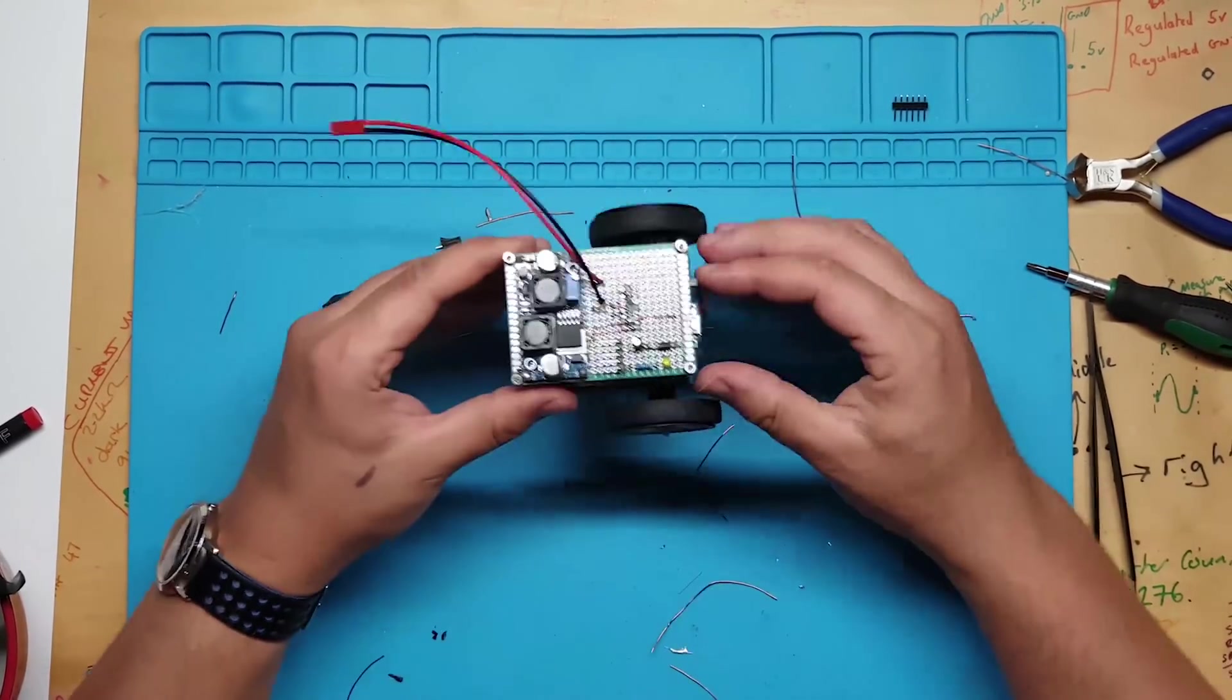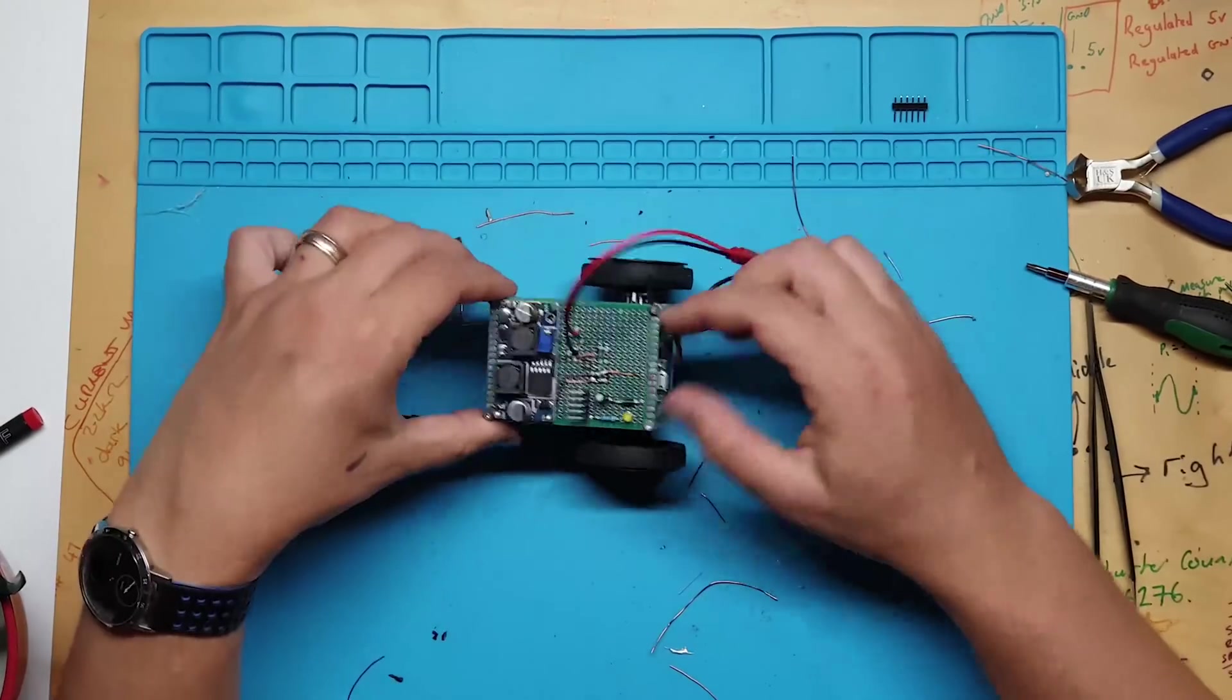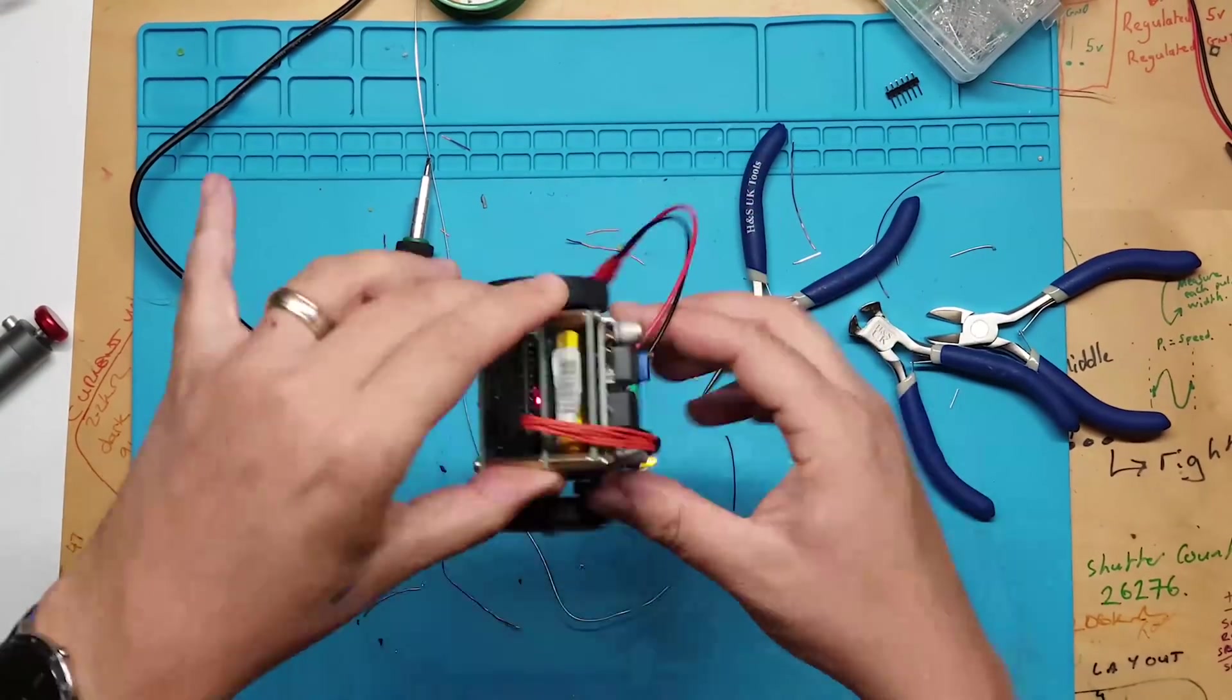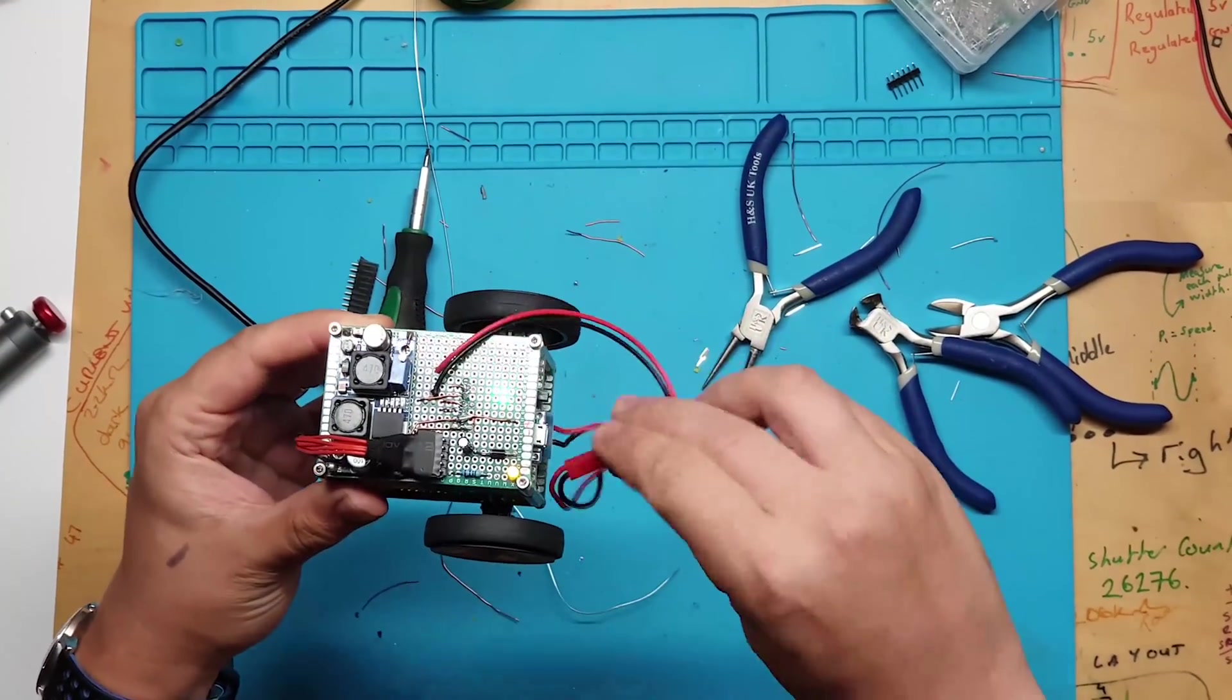Now the battery board is finished we can create some sensor boards that will make the robot do useful things. Thank you for watching and I hope to see you next time where we will build a light seeking and avoiding sensor board.